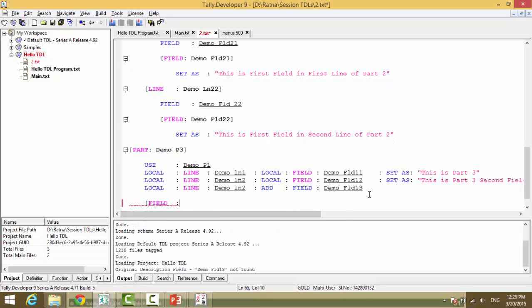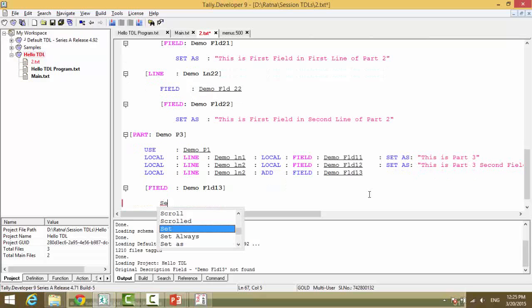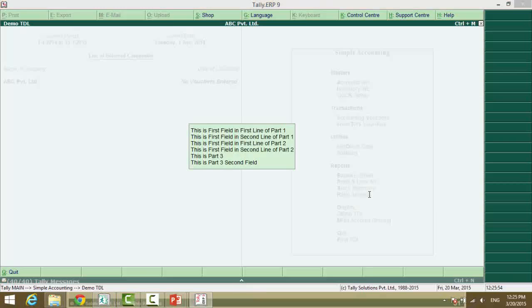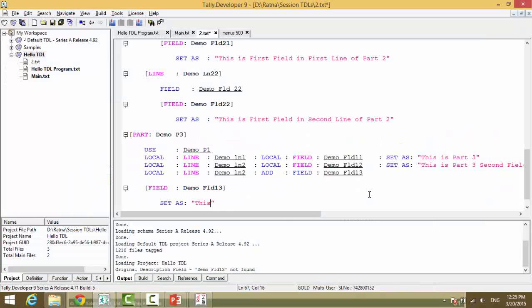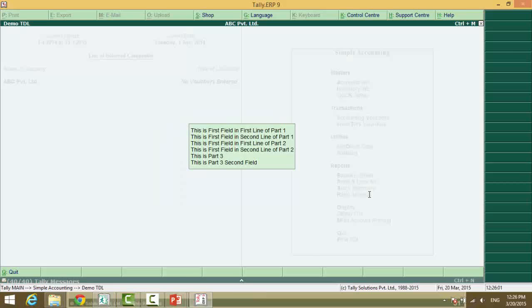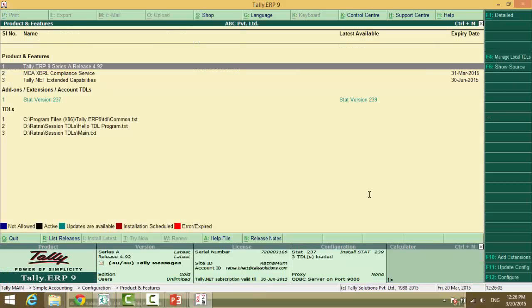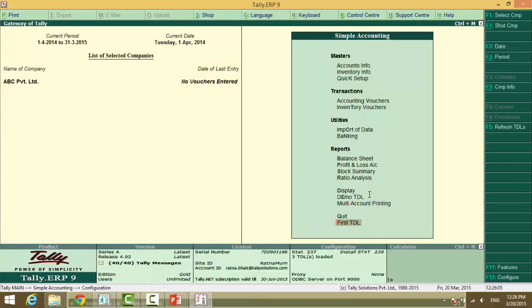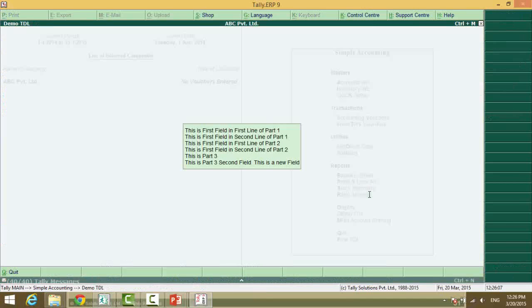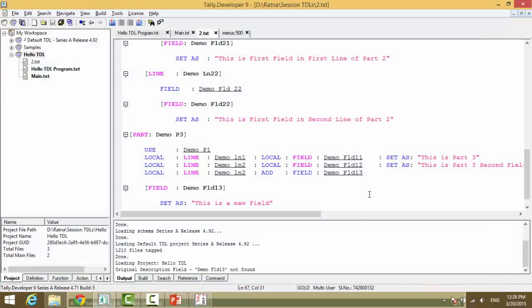So field colon demo FLD 13. Set as this is a new field. Now see this. F12 TTL F4. Notice this. F12 TTL F4.